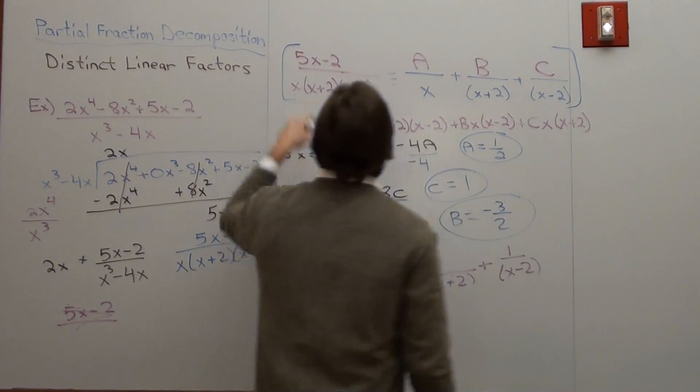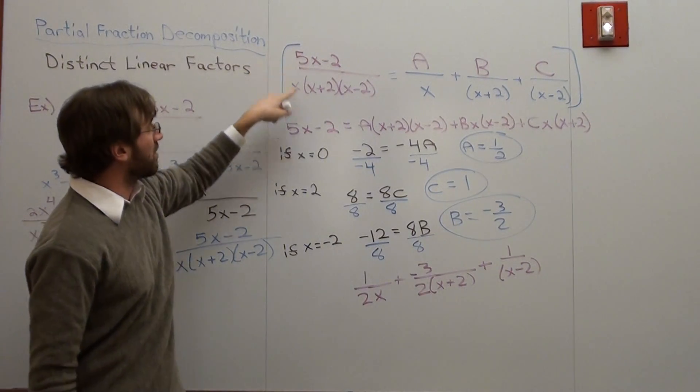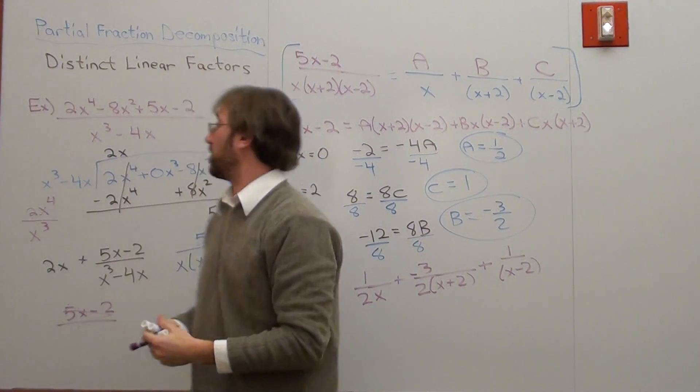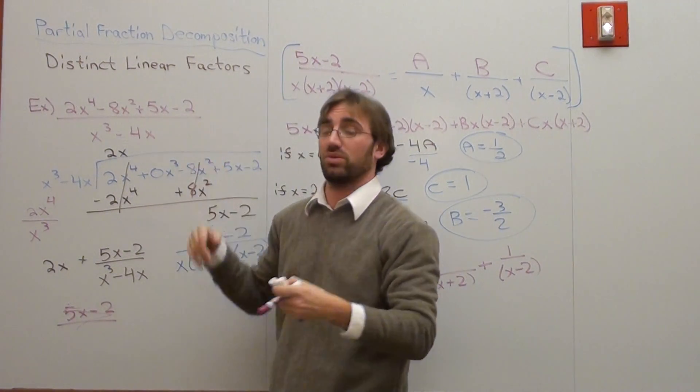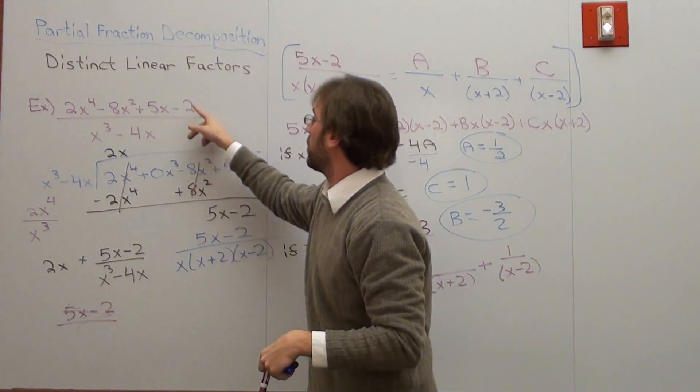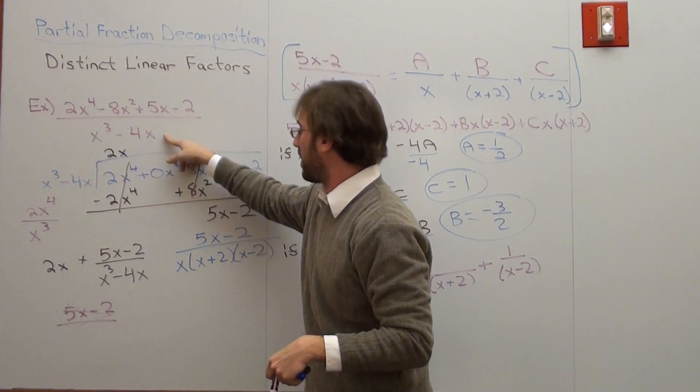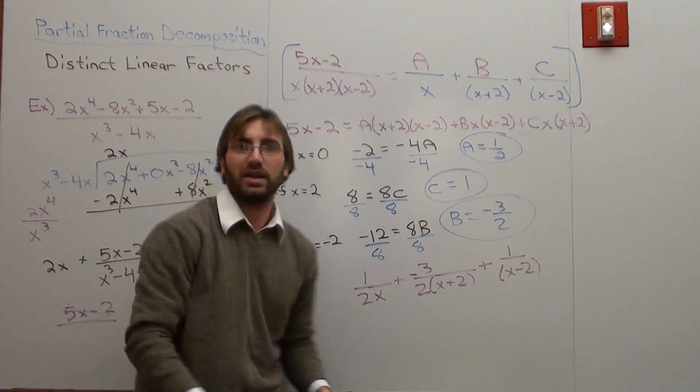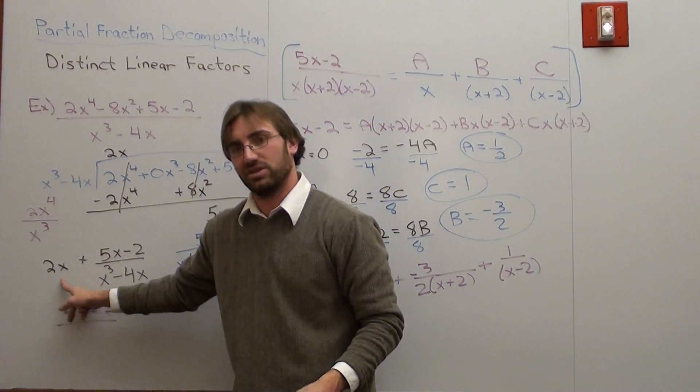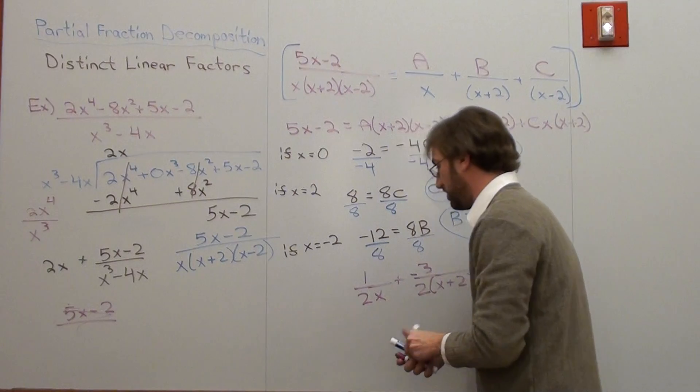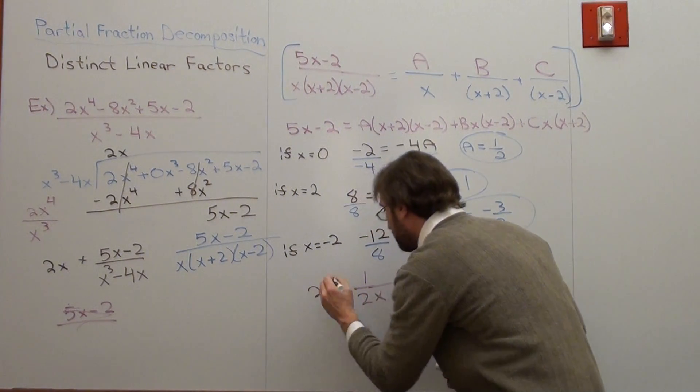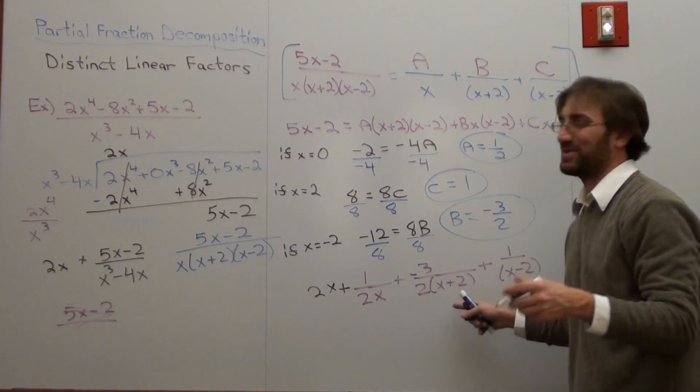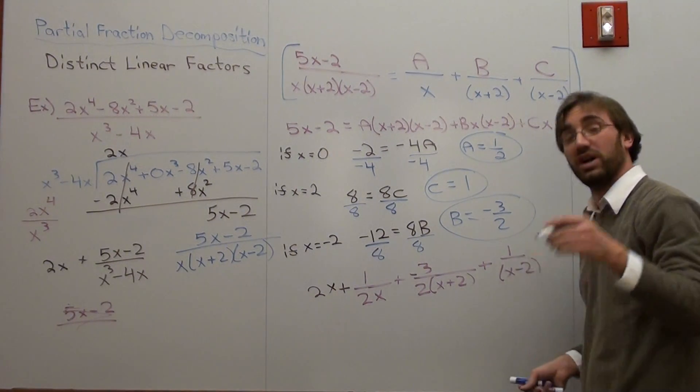Plus C, my C is 1, over x minus 2. Well, these three fractions give me 5x subtracted by 2 over x times x plus 2, x minus 2. But, that's not actually everything that we have to deal with, because when we did this original problem, we want to rewrite it all as a fraction. So, this divided by this turns into this plus this, but I still have to count that 2x in the front. So, it's 2x plus 1 over 2x plus negative 3 over 2 times the quantity x plus 2, plus 1 over the quantity x minus 2.